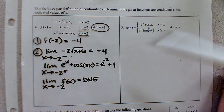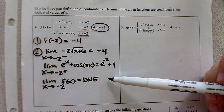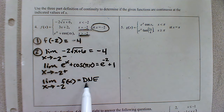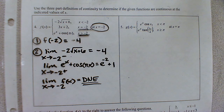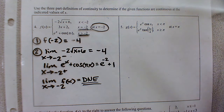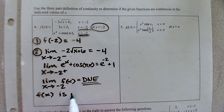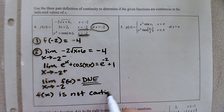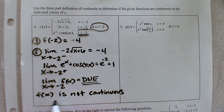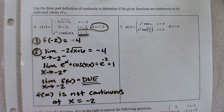The overall limit must exist — that's part of the criteria for continuity. Since we get a 'does not exist' result for the limit, we can conclude that f of x is not continuous at x equals negative two.